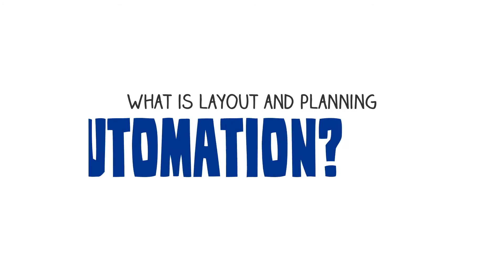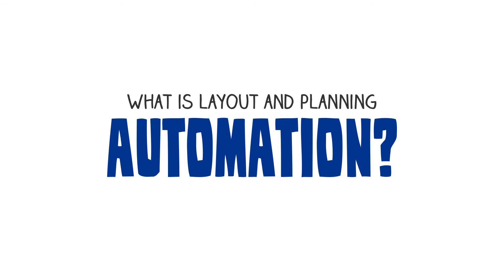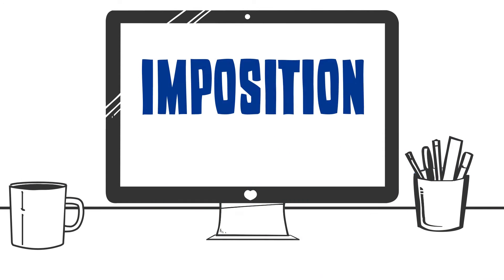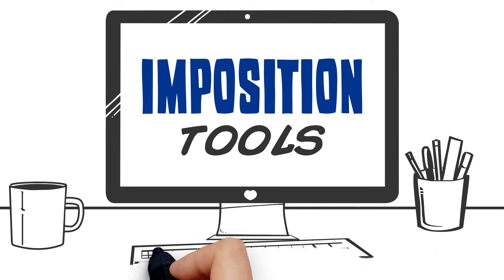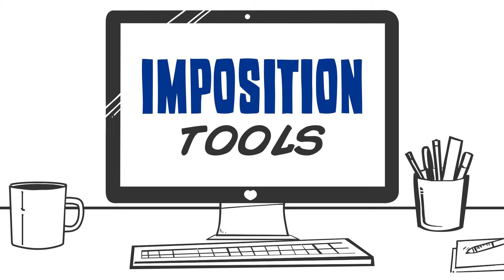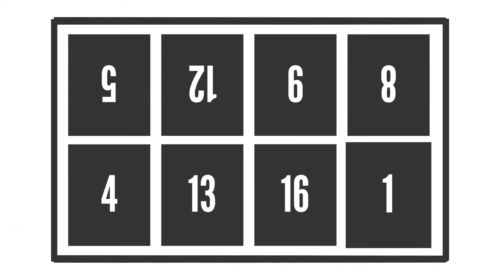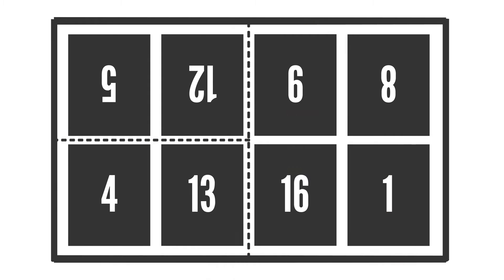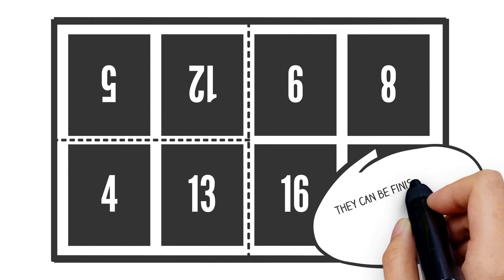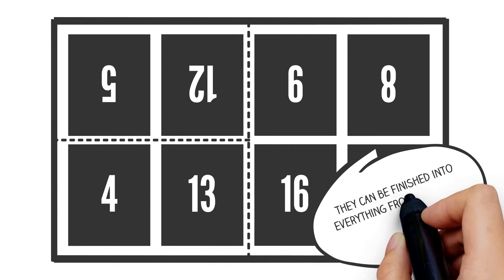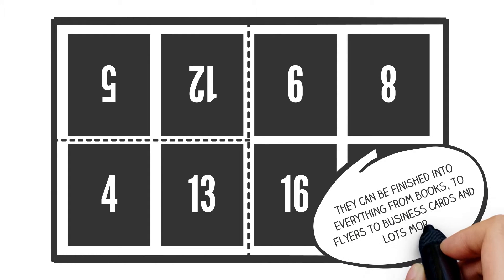What is layout and planning automation? There are many software solutions out there commonly referred to as imposition tools, and most of them work the same way. They enable you to define a press sheet based on its dimensions, marks and grips, and then place jobs on it so that once printed they can be finished into everything from books to flyers to business cards and a lot more.